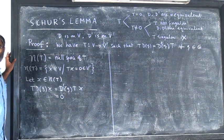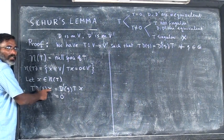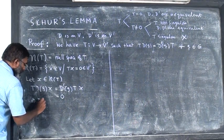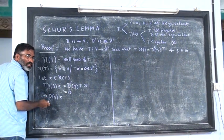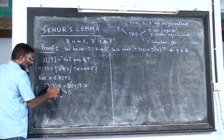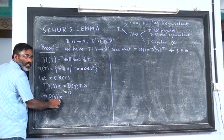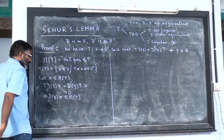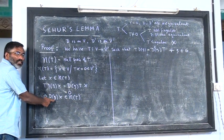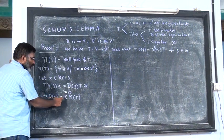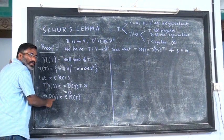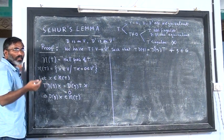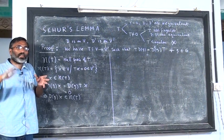So what have we shown? T acting on D_g(x) equals 0, which implies D_g(x) is in V and T acting on it is 0 — so D_g(x) is also in the null space N(T). Since G is arbitrary, D_g(x) is in N(T) for all x and all g, which means N(T) is not only a subspace but an invariant subspace, because the group operation will not generate any vector outside N(T).